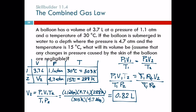For significant figures: the pressures have 2 sig figs, the volumes have 2, and the temperatures have 3 — so we're limited to 2 significant figures, giving us 0.82 liters as the final answer.